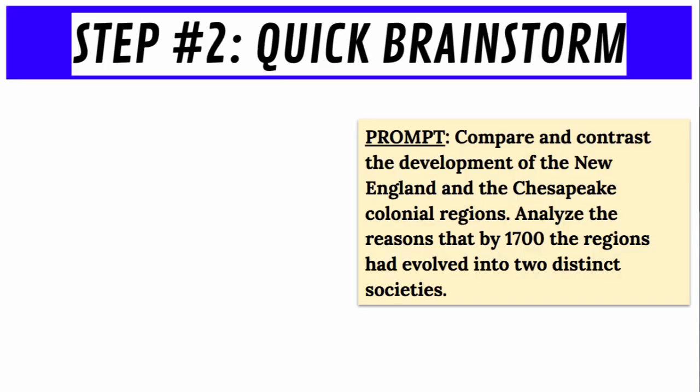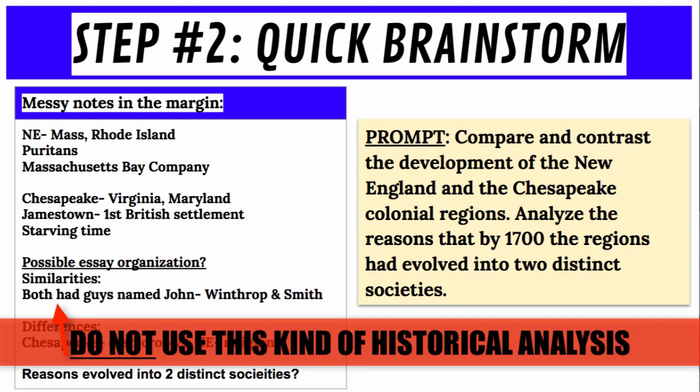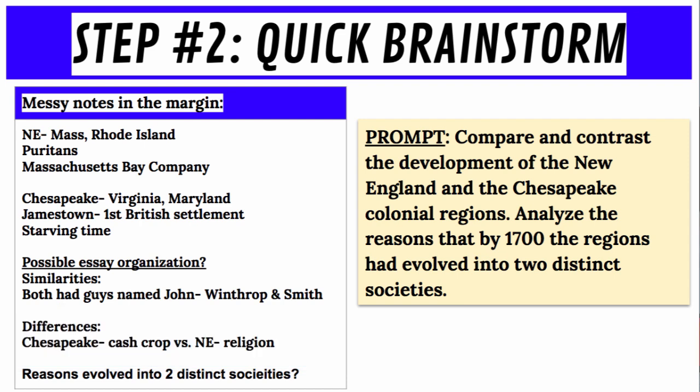Step two is quick brainstorming. The documents will hopefully help you answer the question, but before you look at the documents, start thinking about how you might answer this question without any documents. After a very short brainstorm — less than two minutes — you might have a list like this: New England includes Massachusetts and Rhode Island; Puritans came there; there was a Massachusetts Bay Company. The Chesapeake was Virginia and Maryland; Jamestown was the first British settlement; there was a starving time. Try to organize your thoughts around what you know about similarities, differences, and reasons they evolved into two distinct societies.